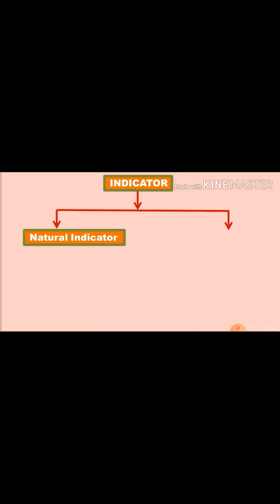Indicators can be classified into two categories: natural indicators and artificial indicators. Natural indicators are obtained from organic materials. Artificial indicators are the chemicals which are used in laboratories to find out whether the substance is acidic or basic in nature.